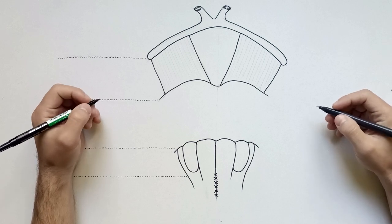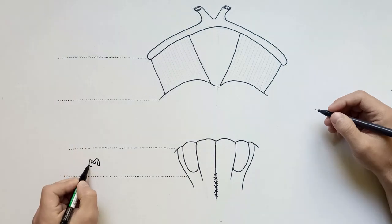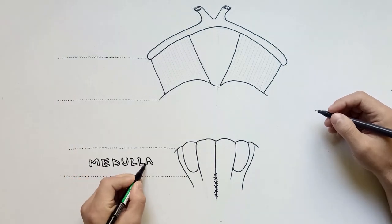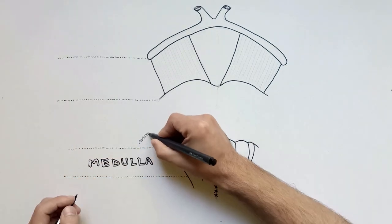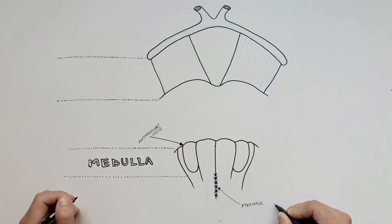Today we will draw the anatomical features present on the anterior aspect of the brainstem. The bottom part of the brainstem is the medulla, which is bounded superiorly by the pontomedullary sulcus and inferiorly by the pyramidal decussation.